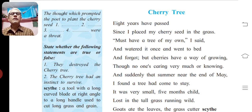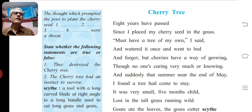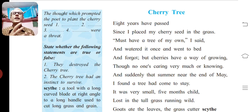You can also read this on the screen in front of you. See the first margin activity: 'The thought which prompted the poet to plant the cherry seed.' Then there are four numbered blanks. These four points are nothing but the summary of the beginning of the poem — the four stages of the early life of the cherry plant.